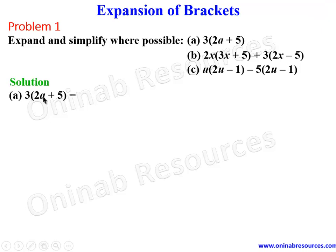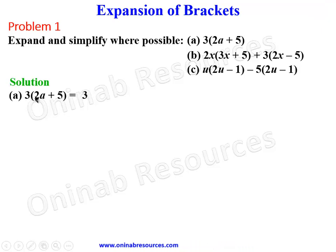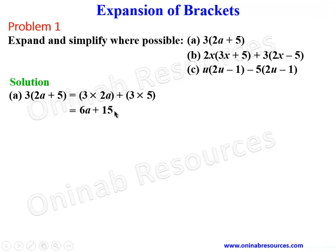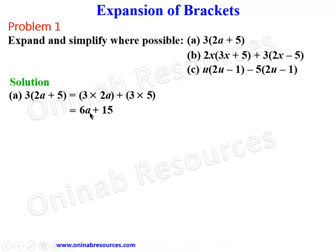That is to say, we write 3 times 2a plus 3 times 5. Then we simplify: 3 times 2a gives 6a, and 3 times 5 gives 15, so we have 6a plus 15. That's part a — we cannot simplify further because they are not like terms.